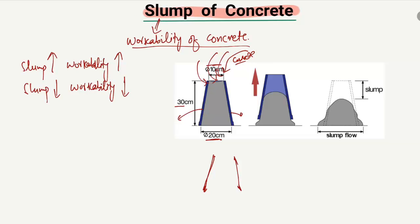After a few seconds, the cone is removed — you can see here it has been moved upward. So this cone is removed in the upward direction. We then see that the concrete spreads out, and this is known as the slump flow — that is, how much it has spread after removing the standard cone.